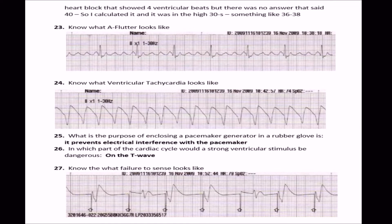Now we're taking a look at notes 23 to 27. The top part of this really belongs on the previous slide, so go back, look at the previous slide, then jump forward and you'll see the part about heart blocks — they're supposed to go together. You have to know what Flutter looks like, Fib looks like, VTAC, VFib, failure to sense, failure to capture. I put together an EKG slideshow on basic rhythms — it's not long and complicated, it's very easy, but you have to keep going over it repeatedly.